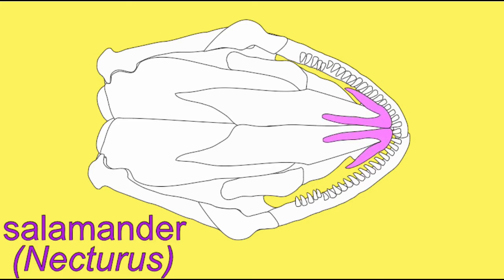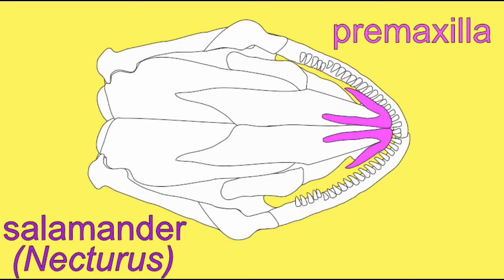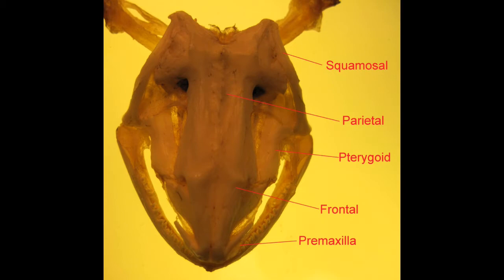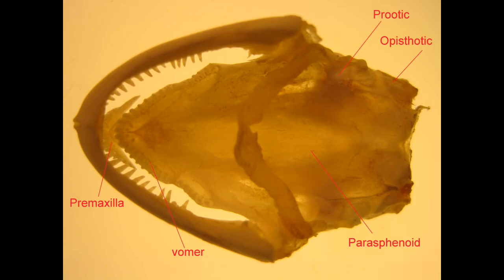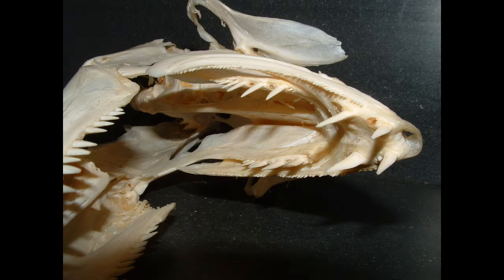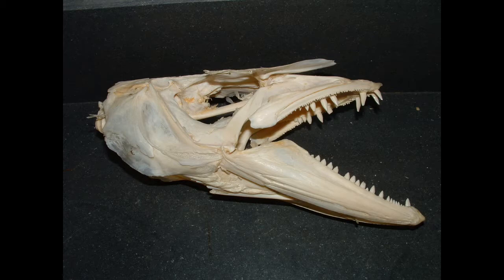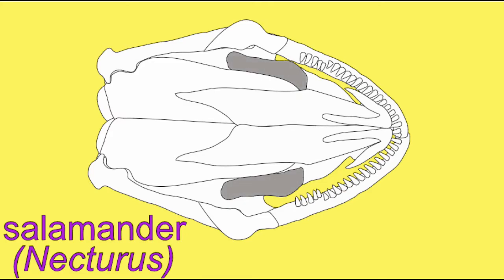While the premaxillary bone of the upper jaw holds teeth, there is no maxillary bone, which in most species holds the majority of the marginal teeth. However, there are teeth located on the pterygoid — which in humans is part of the sphenoid bone — and the vomer. Remember that in ancestral fish, there can be teeth and quite prominent fangs on bones of the roof of the mouth. Therefore, this genus of salamander possesses teeth on multiple skull bones in the roof of the mouth.